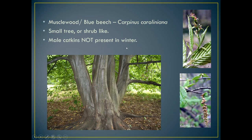The last species — the musclewood, or blue beech, also known as Carpinus caroliniana — can be a small tree or shrub, but in this example it's a larger tree. Unlike the other species, the male catkins are not present in the winter. The main distinguishing factor is the bark, which is much smoother than the other species and almost appears to look like muscle, hence the name.